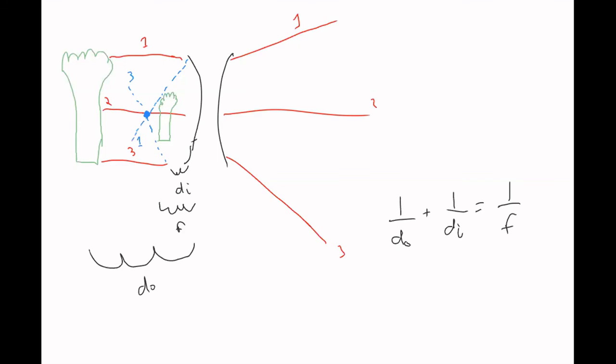The image is on the same side of the lens as the object. If you imagine your eye was over here, just like with the mirror, your eye imagines where the lines would have gone on the opposite side. So they're doing the same thing with the lens — that's why we need the blue lines for the concave lens.